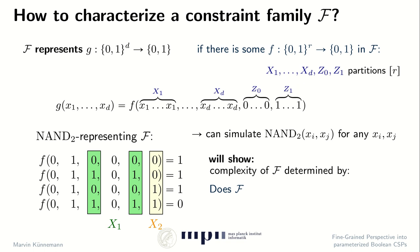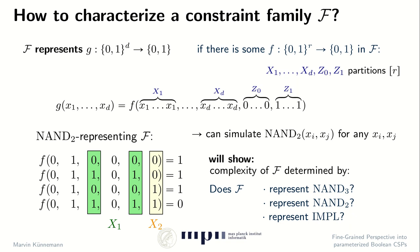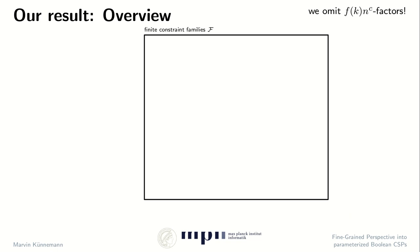So now what we will show is that the complexity of a constraint function family f is precisely determined by the following three questions: Does f represent the ternary NAND? Does it represent the binary NAND? And does it represent the binary implication function?